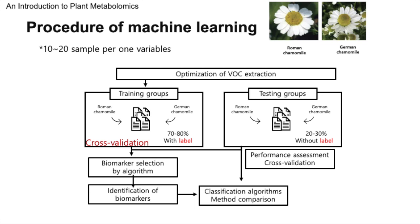In machine learning, there is no one-size-fits-all. Thus, we conduct a thorough comparison of various classification algorithms. This might include the elegant simplicity of logistic regression, the robust decision boundaries of support vector machines, the ensemble strength of random forests, and the layered complexities of neural networks. Each algorithm will be evaluated to discern which harmonizes best with our data, offering the most reliable classification performance.